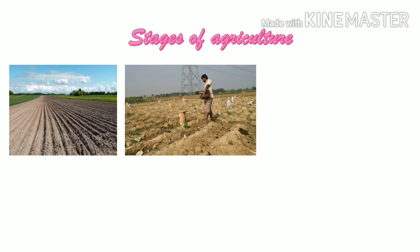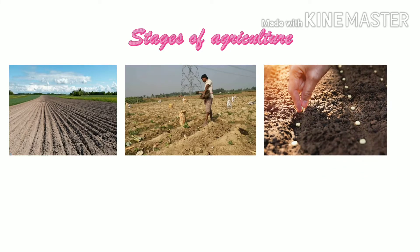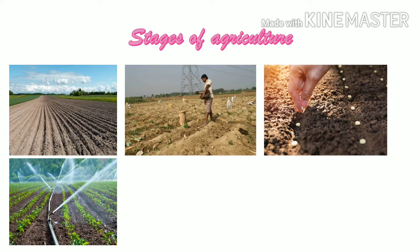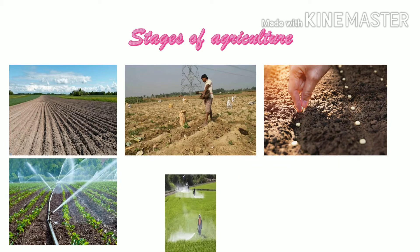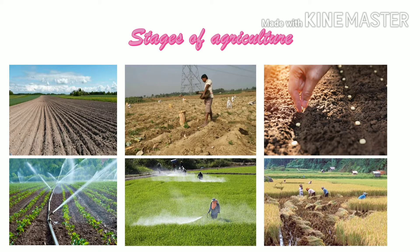Third, seeds are sown. Fourth, the crops are irrigated or watered. Fifth, the crops are sprayed with chemicals called pesticides to protect from pests. And lastly, number six, the crops are harvested.